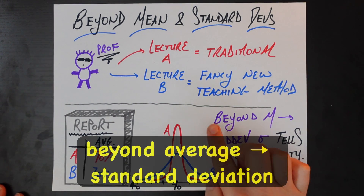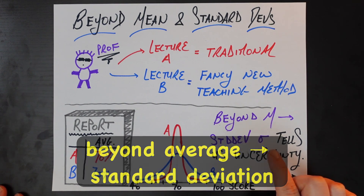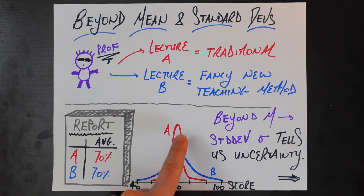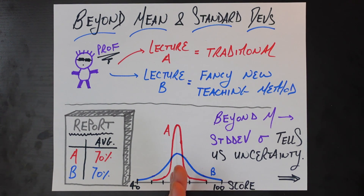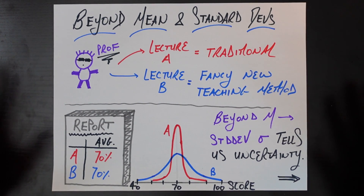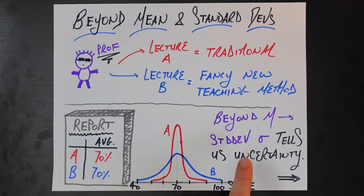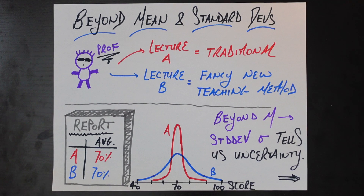So let's start our story there — going beyond the average mu and talking about the standard deviation. Let's say that the distributions of scores for the students in lecture A look like this red plot here, and for the students in lecture B look like this blue plot here. As promised, the average of both of these distributions is at 70. But you can see the big difference here is in the spread, variance, or standard deviation of these two score distributions. The standard deviation is much wider for the students in lecture B who got the fancy new teaching method than the students in lecture A who got the traditional method. And that tells us about the uncertainty we have around this estimate of the average score.